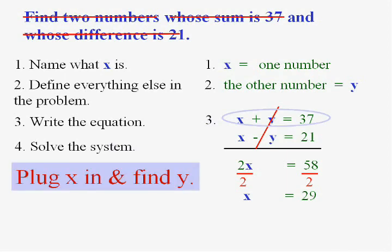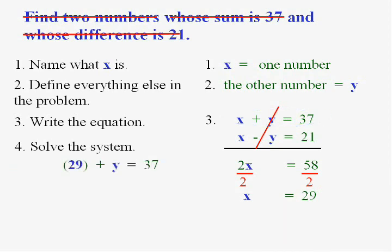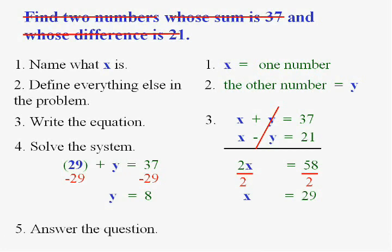Now I still have to find the Y. I know what the X is but I have to find the Y. Remember with the addition method or the substitution method you take that X, put it into one of the equations for X and find the Y. So here we put it in. Subtract 29 from both sides to solve for Y and Y will be 8. We have to answer the question. The numbers are 29 and 8, and if you think about it, 29 and 8 add up to 37 and they subtract to 21. So that's your answer.